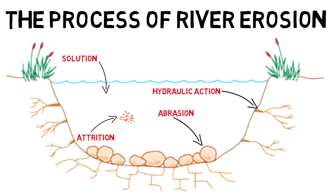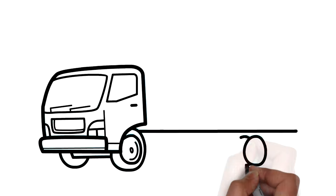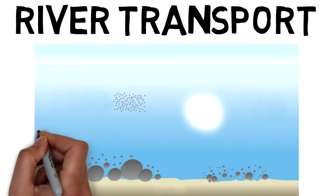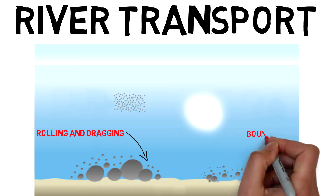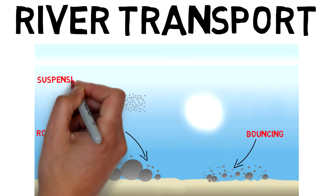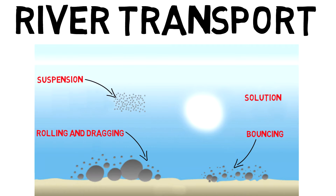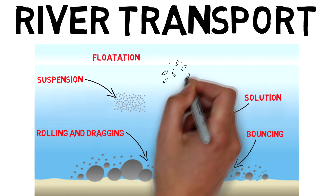Now we're going to move on to river transport — how the river moves its load. There are a few different types: rolling and dragging, where the river moves heavy stones and rocks; bouncing, which is similar to rolling and dragging but with smaller stones and rocks; suspension, where small stones and pebbles are floating in the water; solution, where tiny bits of stone have dissolved into the water; and finally flotation, where leaves and sticks float along the top of the water.